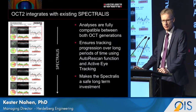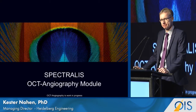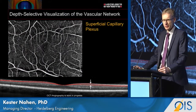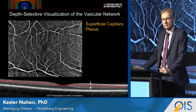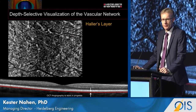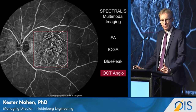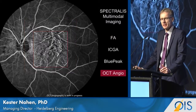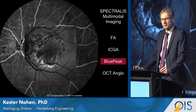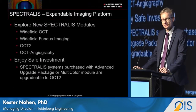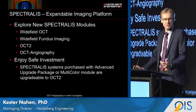This makes Spectralis a very safe investment, as you can have patients imaged on both platforms and look at progression series over time. The OCT2 module is also the foundation for OCT angiography. Here we are looking at the vascular network — the profuse nasal network from the superficial plexus, the deep plexus, all the way down to the choriocapillaris and the choroid. As a multimodal imaging platform, OCT angiography fully integrates with fluorescein and ICG angiography.